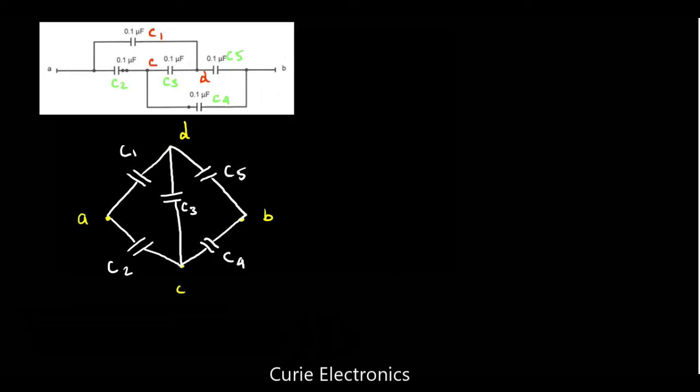Now you are convinced it is a bridge. It is like a resistance bridge kind of connection, a bridge made up of capacitors we can say. So now we have to find the capacitance between A and B points. Before that, we have to check whether the bridge is balanced or not.